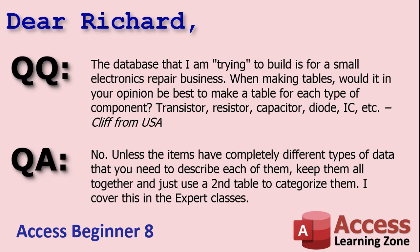Cliff from the US asks: the database I'm trying to build is for a small electronics repair business. When making tables, would it, in your opinion, be best to make a table for each type of component — transistor, resistor, capacitor, diode, etc.? No, Cliff. Unless the items have completely different types of data that you need to describe each of them, keep them all together and use a second table to categorize them.